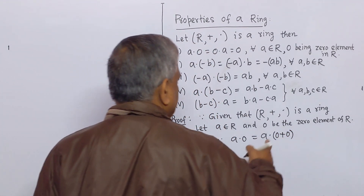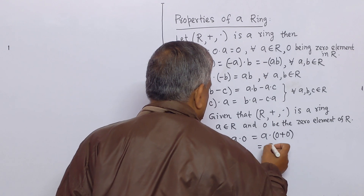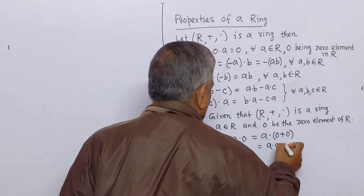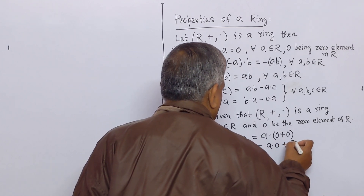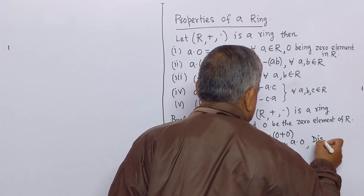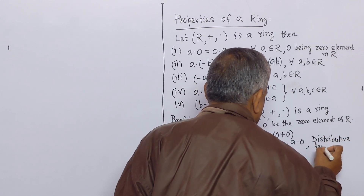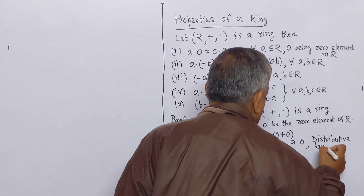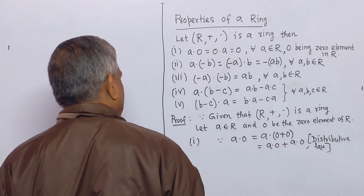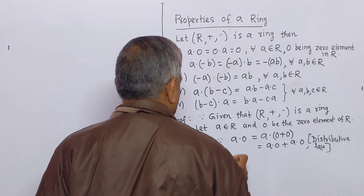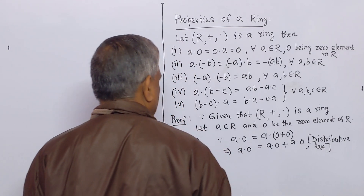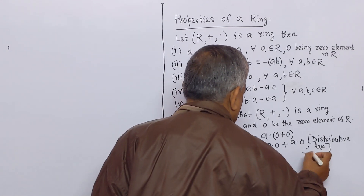By the distributive law, since a ring holds the distributive law, this becomes a·0 + a·0. This is equation number 1.